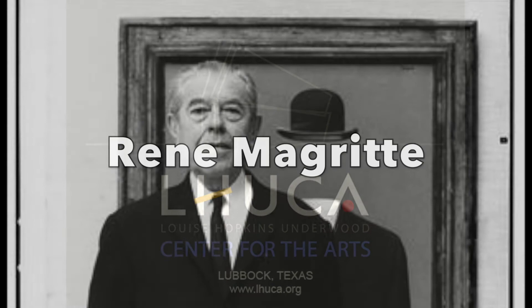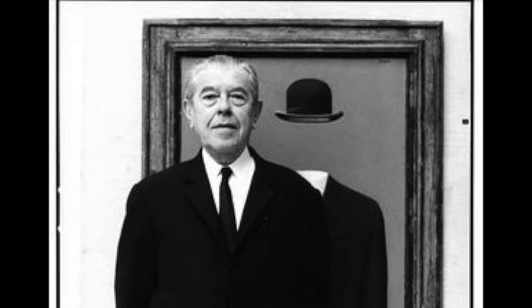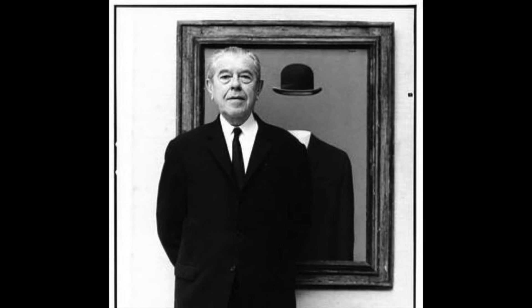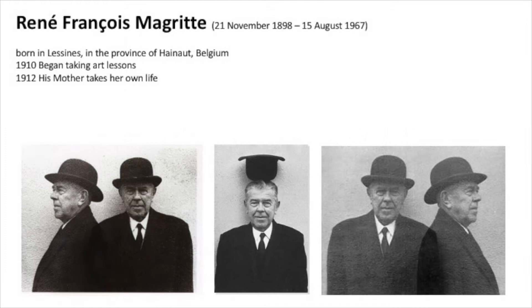Hi everyone and welcome to another Luca lecture. The topic of today's lecture will be René Magritte, a surrealist artist from Belgium. Magritte's power comes in his selection of very simplistic objects that are very familiar to the viewer and putting them in a surrealistic combination along with a title to create a very powerful piece of art.